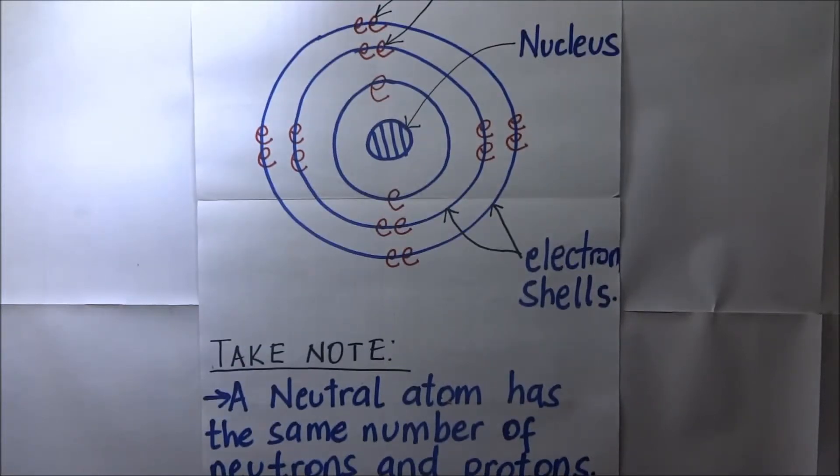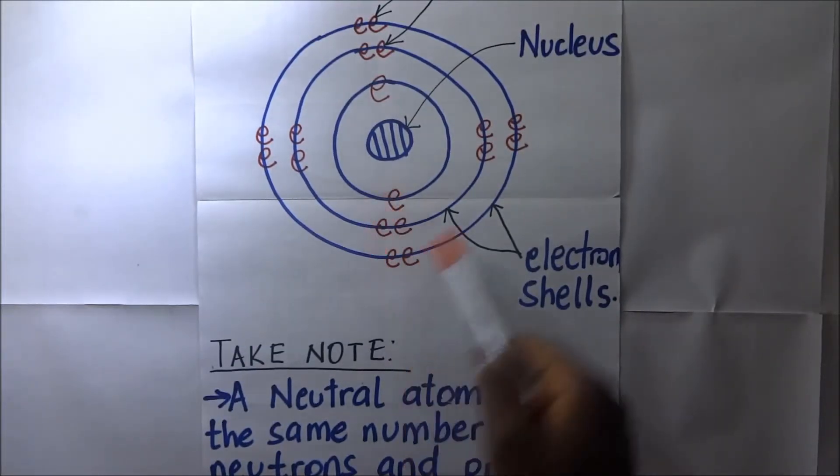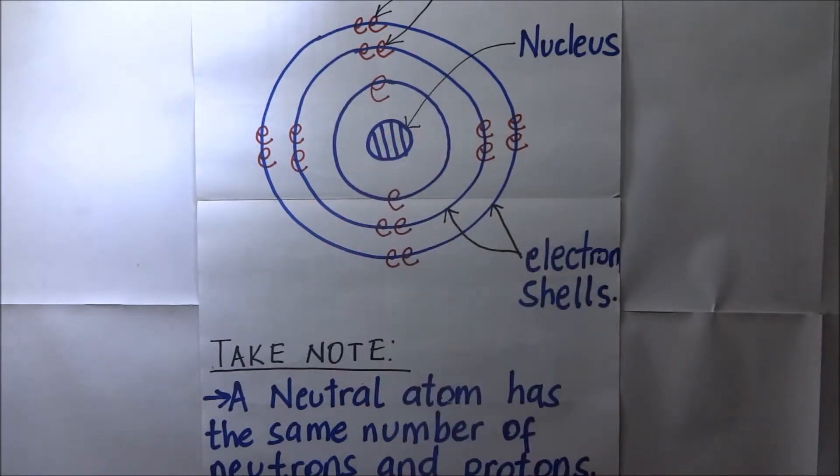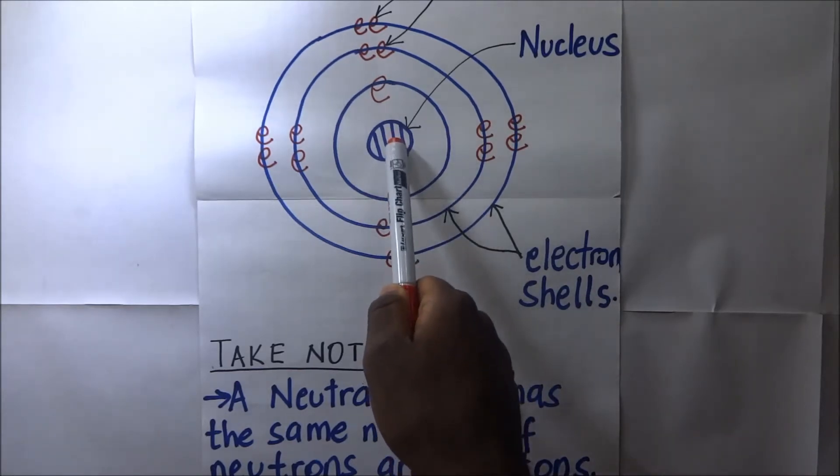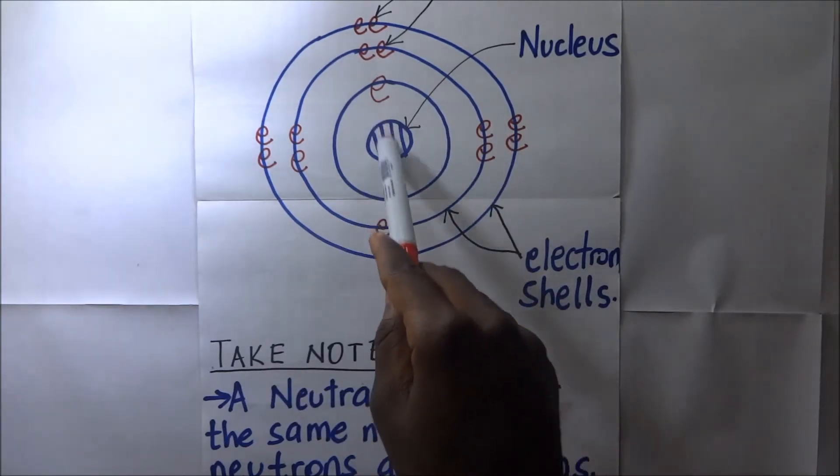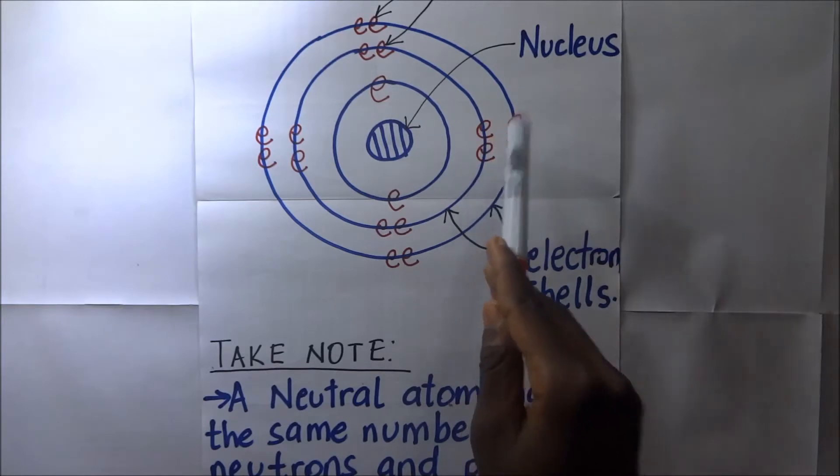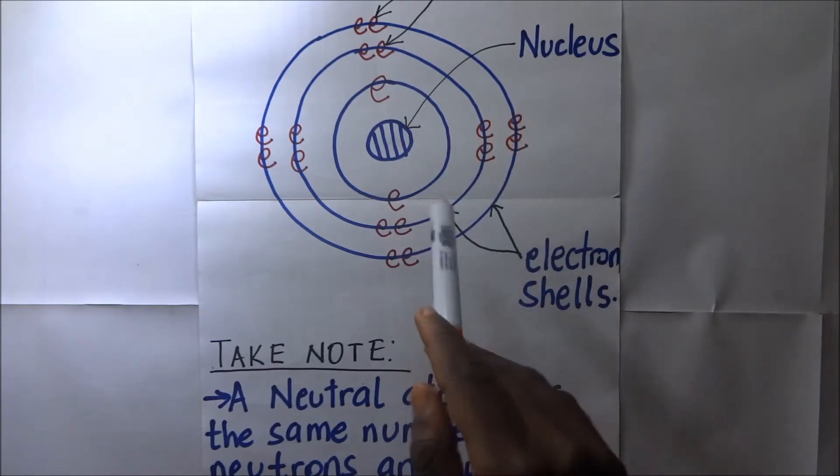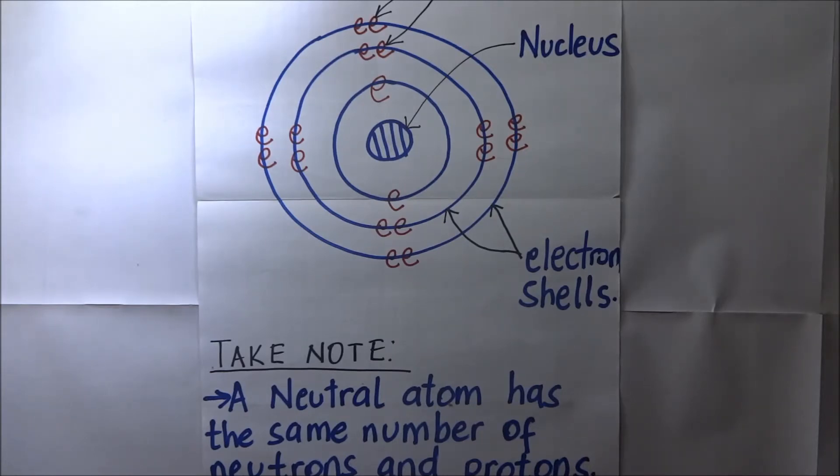Now during bonding, these electrons that are always moving around the nucleus can be lost. When an electron is lost during bonding, it means that the overall number of protons in the atom will be more than the overall number of electrons. It would mean that this atom has got more positive charges than negative, and so overall, the atom will be considered a positively charged one.